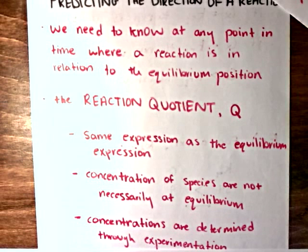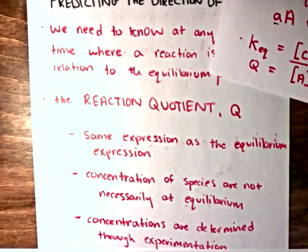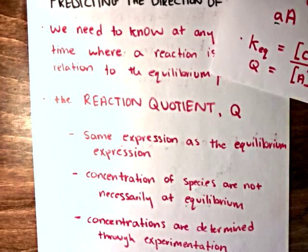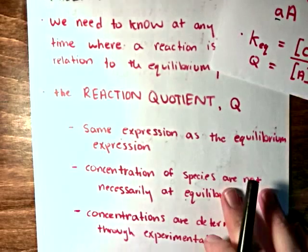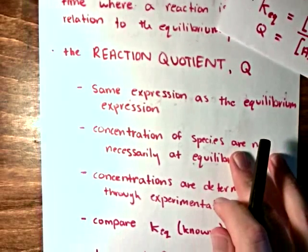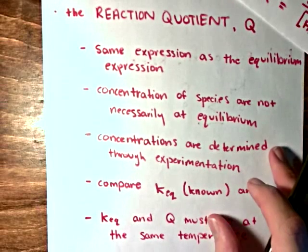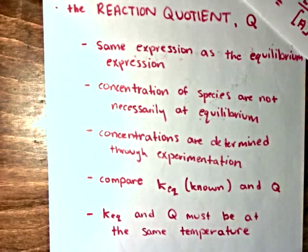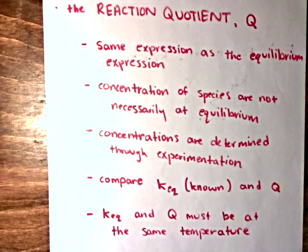The concentrations of the reactants and the products are determined purely through experimentation. And once we have determined that value, the reaction quotient Q, through experimentation, we compare it to a known value of the equilibrium constant, which we were either given in a problem or which we looked up in a table.